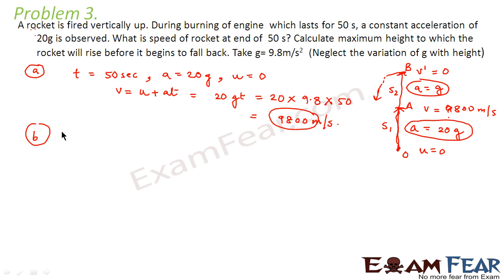So let us first calculate for journey from O to A. So in that case what would be S1? Let us apply the kinematic second equation which says S is equal to UT plus half A T square. So what is U in this case? From O to A U is 0. So this is left with half into A. What is A for this journey? O to A. A is equal to 20G. And what is T? T is 50 seconds. So this is 50 square.